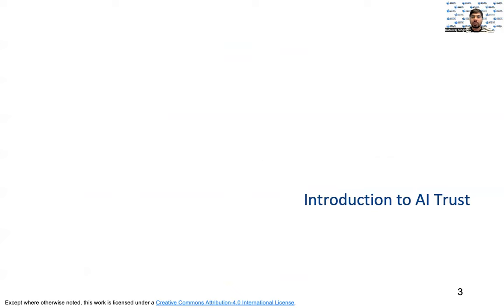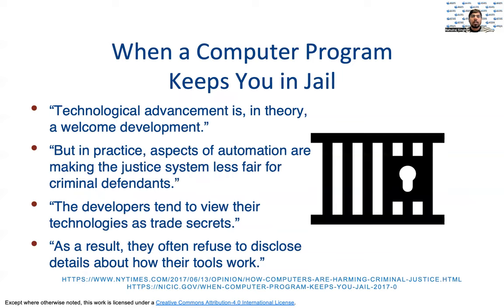Let's first start with a brief introduction to trust in artificial intelligence. Technological advancements theoretically are a welcome development for us, but in practice, trying to look at it from a legal proceedings perspective, as highlighted by an article in the New York Times, there are aspects of automation that are making the justice system less fair for criminal defendants. The root of the problem is that automated criminal justice technologies are largely privately owned and sold for profit. The developers for these technologies tend to view their products as trade secrets. As a result, they often refuse to disclose details about how their tools work, even to criminal defendants and their attorneys, and even under a protective order or in the controlled context of a criminal proceeding or parole hearing.